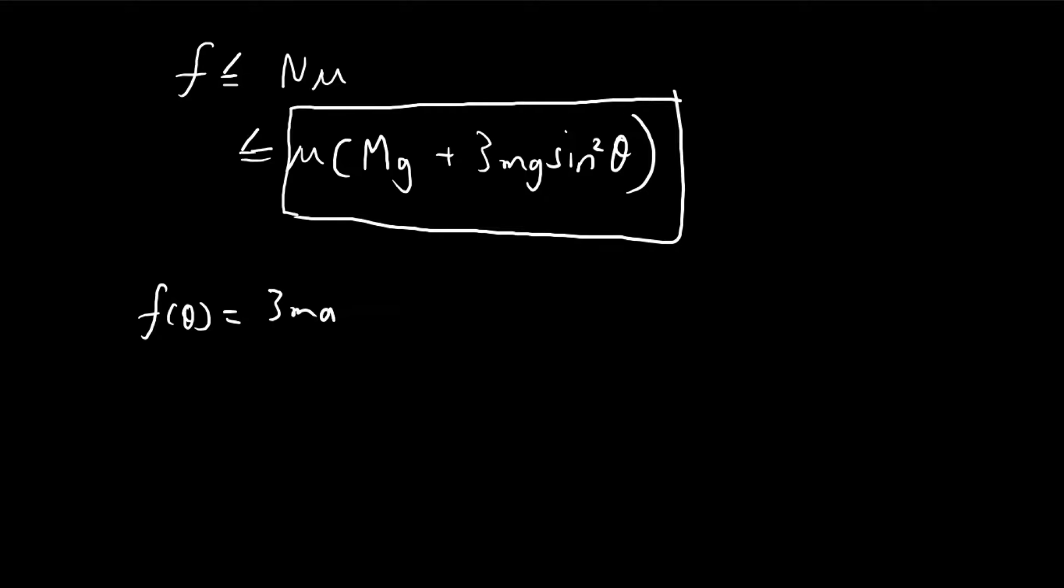So 3mg sin theta cos theta minus mu mg plus 3mg sin squared theta. So we're going to consider this function.